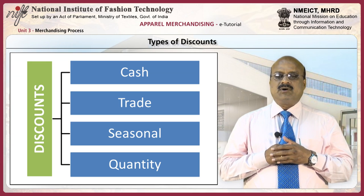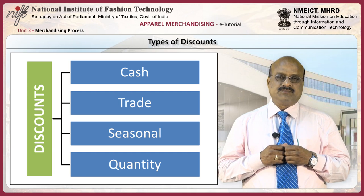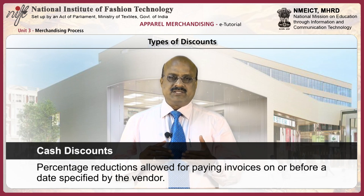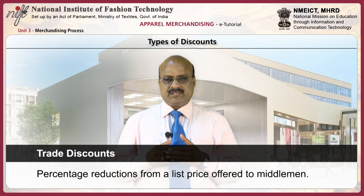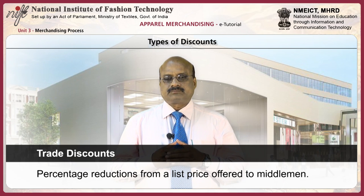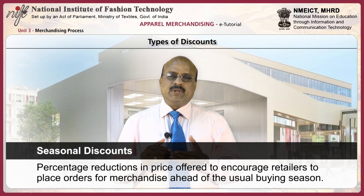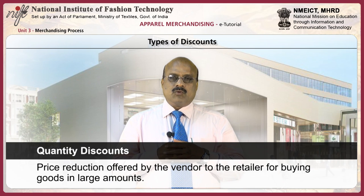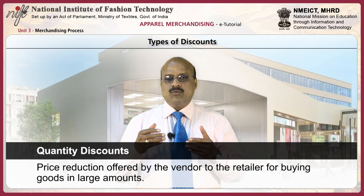Discounts may be in the form of cash discounts, trade discounts, seasonal discounts and quantity discounts. Cash discounts are percentage reductions allowed for paying invoices on or before a date specified by the vendor. Trade discounts are percentage reductions from a list price offered to middlemen. Seasonal discounts are percentage discounts in price offered to encourage retailers to place orders for merchandise ahead of the usual buying season. Quantity discounts are price reductions offered by the vendor to the retailer for buying goods in large amounts.